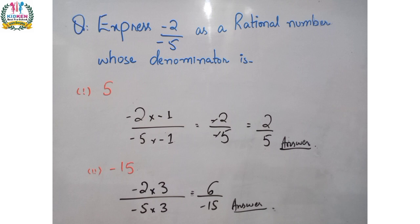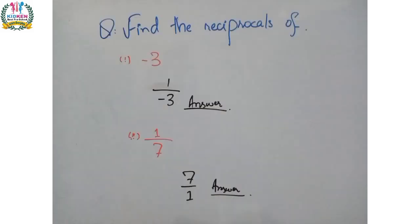The next part asks for the denominator to be minus 15. Again we have the equation minus 2 upon minus 5, and we multiply numerator and denominator to get denominator minus 15. So minus 2 multiplied by 3 upon minus 5 multiplied by 3 gives us 6 upon minus 15. This is the final solution.